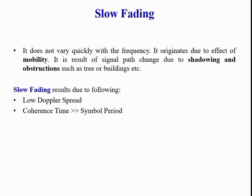In slow fading, the channel does not vary quickly with frequency. It originates due to the effect of mobility and results from signal path changes due to shadowing and obstructions such as trees or buildings. Slow fading results from two factors: low Doppler spread, and coherence time much greater than the symbol period. In slow fading, the impulse response changes much more slowly than the transmitted signal.